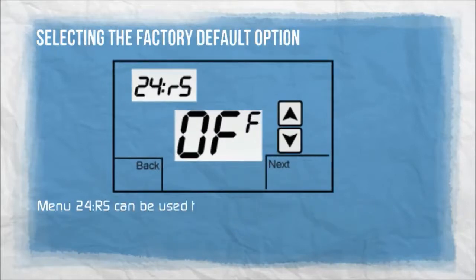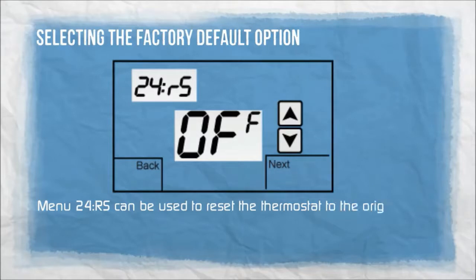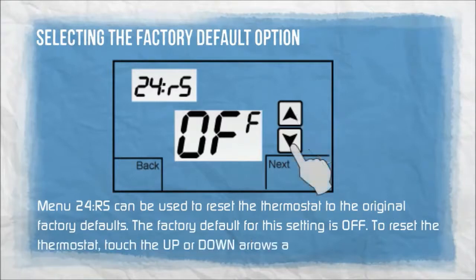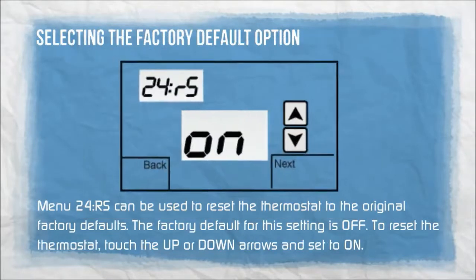Menu 24RS can be used to reset the thermostat to the original factory defaults. The factory default for this setting is OFF. To reset the thermostat, touch the up or down arrows and set to ON.